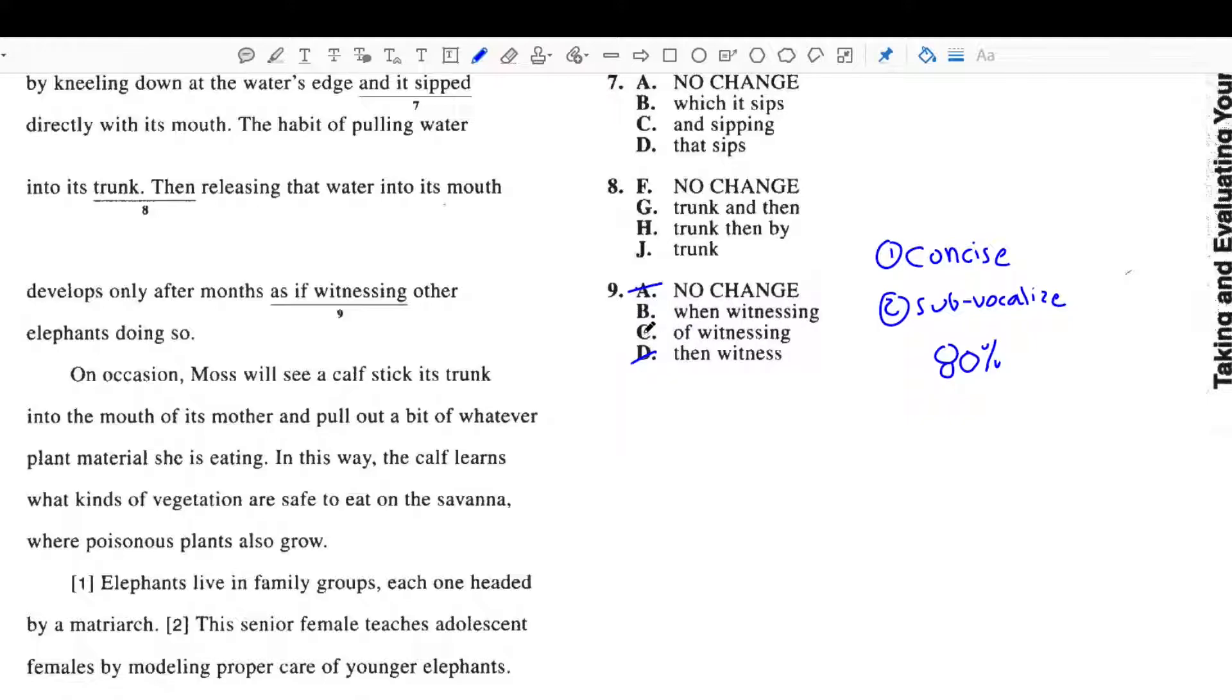Now, when you sub-vocalize them, for most of us, B and C both sound pretty good. But, hopefully, you recognize that C sounds just a little bit better, and you would have picked C. So, remember, this works 80% of the time. Sometimes, it's a little difficult to tell. But, I think for most of us here, if you read this, C could sound better than B. So, you would pick C.